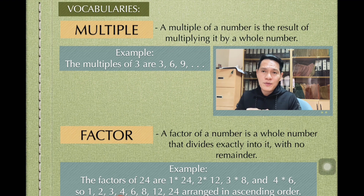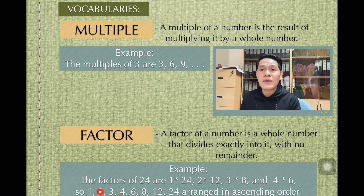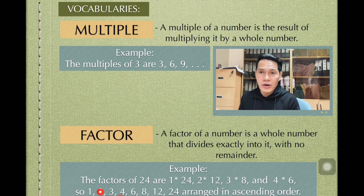So here we go. We list down the factors. We have 1, 2, 3, 4, 6, 8, 12, and 24. We list them down in ascending order.